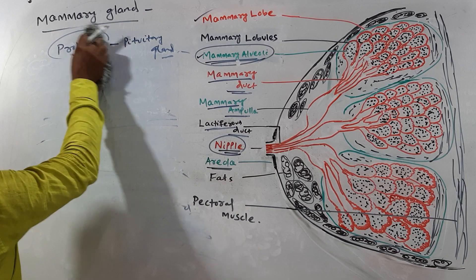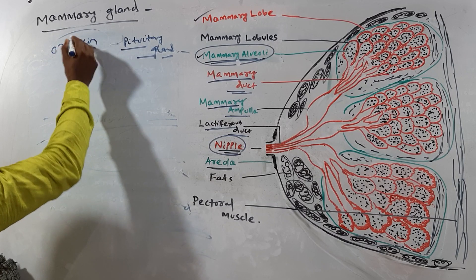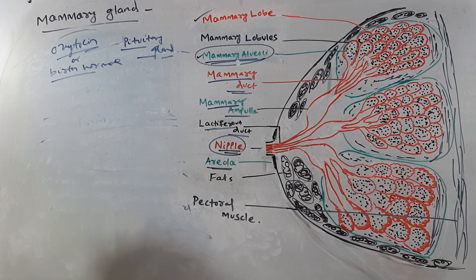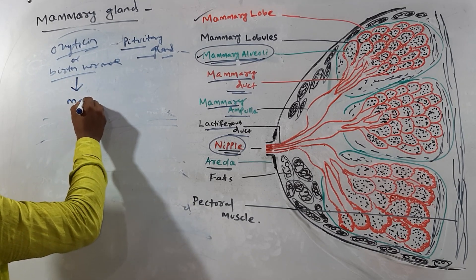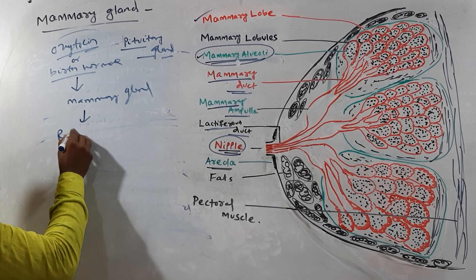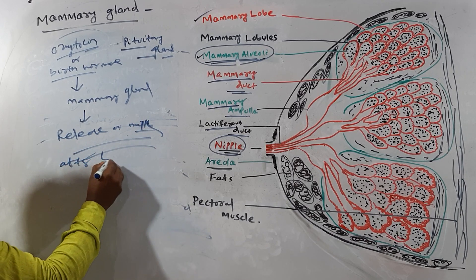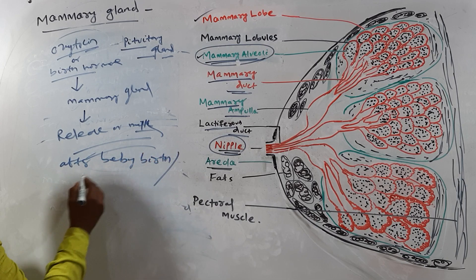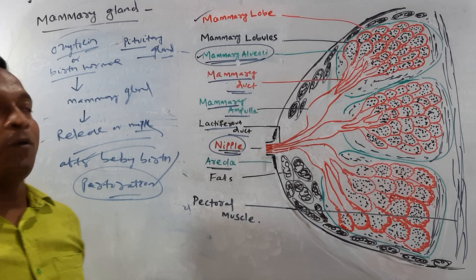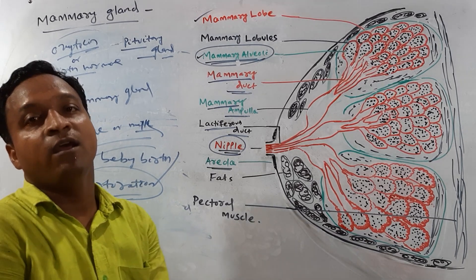Another hormone also secreted from the pituitary gland is oxytocin, otherwise known as the birth hormone. Oxytocin stimulates the mammary gland for the release of milk after baby birth — that is, after parturition.